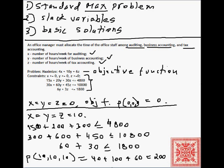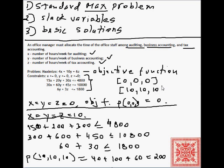The objective function at that feasible vector equals 40 + 100 + 60 = 200. So this feasible vector is better than the zero vector. In general, the simplex method moves from one feasible vector to another feasible vector, and eventually, if the problem has a solution, it terminates or converges to a feasible vector that optimizes the objective function — either minimizing or maximizing it.